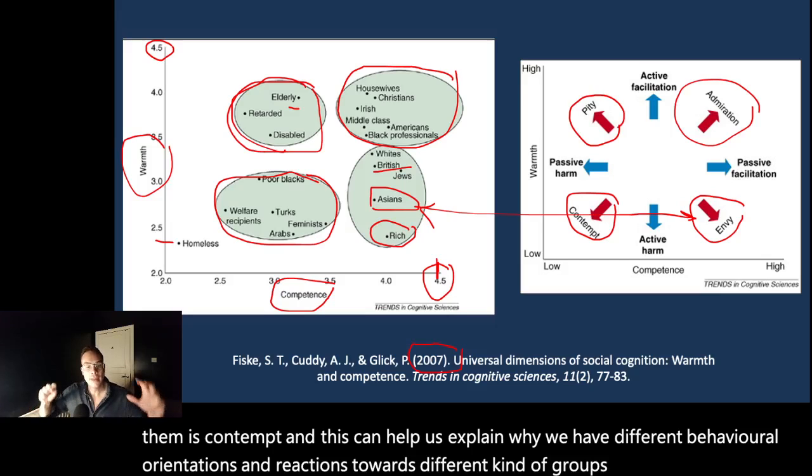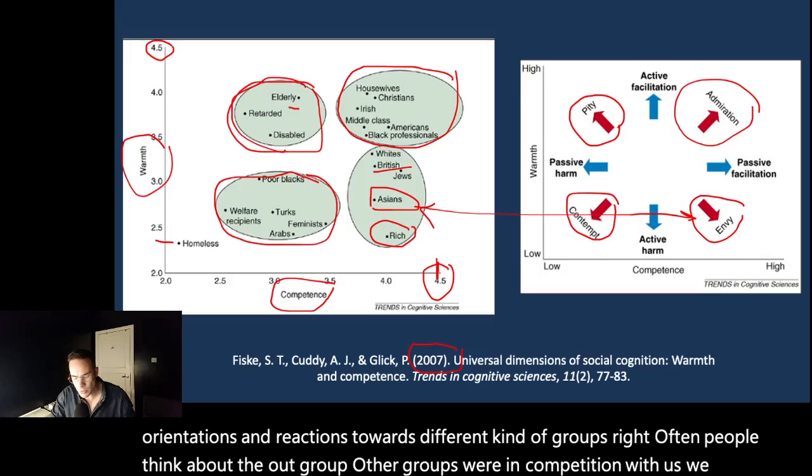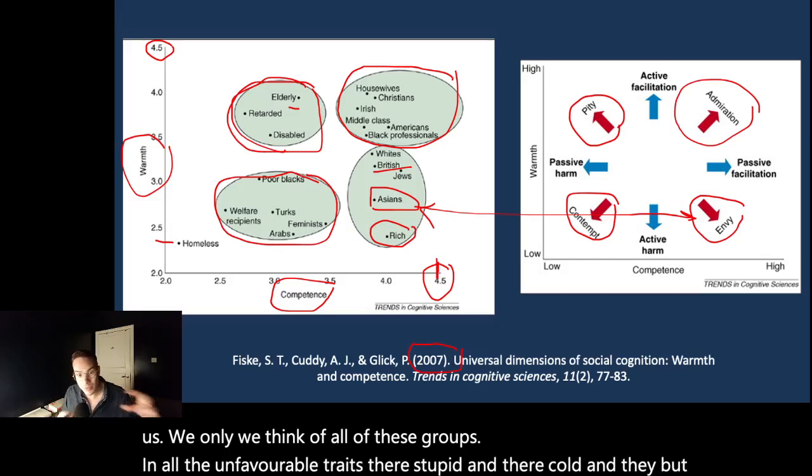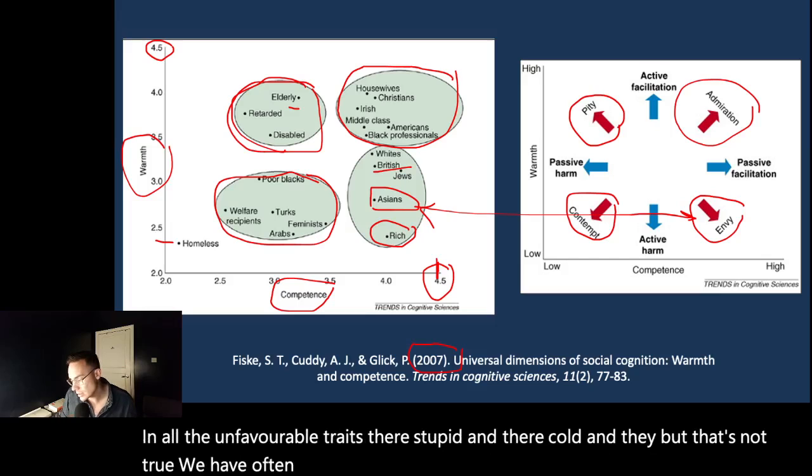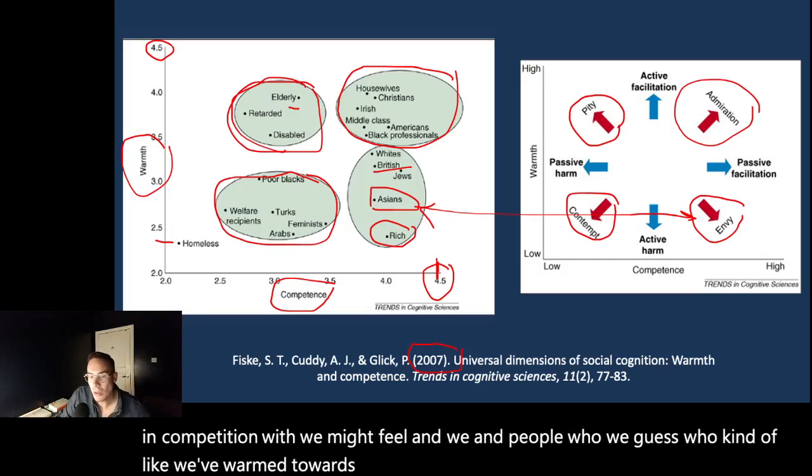Often people think about the out group, other groups who are in competition with us, and we think of all of these groups in all the unfavorable traits. They're stupid and they're cold. But that's not true. We have often very ambivalent stereotypes about other groups. People we're in competition with, we might feel envy. And people who we feel warm towards but who are somewhat incompetent, we pity them.